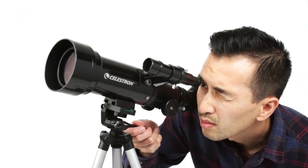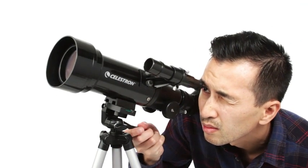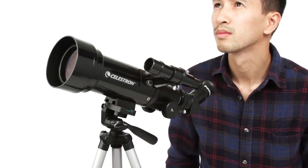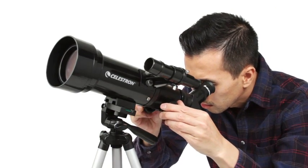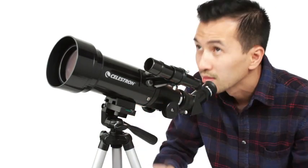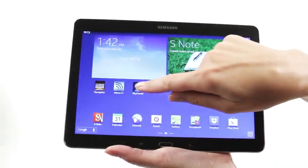To view objects, first center them in the 2x20 optical finder scope. Then, get a closer look using either the low or high-power eyepiece. Simply turn the knobs to bring your subjects into sharp focus.